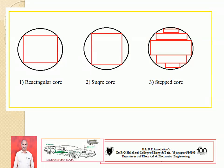The diagram shows different types of cores used in transformers: number one, rectangular core; number two, square core; number three, stepped core — which may be two-stepped, three-stepped, or four-stepped. You can go for multi-stepped cores. One important thing to remember: the two-stepped core is also referred to as the cruciform core. D is the diameter of the circumscribing circle, and by using D we can estimate the area of the circumscribing circle, that is π D² / 4.